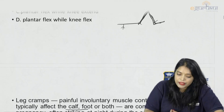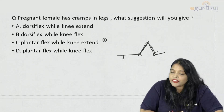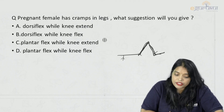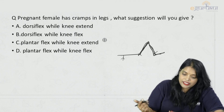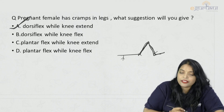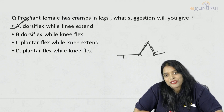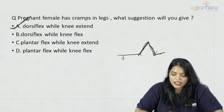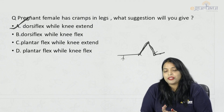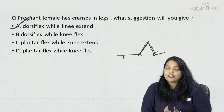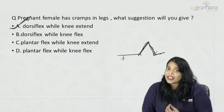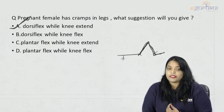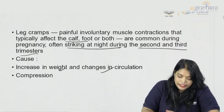So going back to the question: pregnant female with cramps — the suggestion you will give is dorsiflexion with knee extension. The answer is A. This was a previous year question testing what we see day-to-day in antenatal clinics. Round ligament pain is another common ANC finding, and paralytic ileus has also been asked previously — you should know about that too.